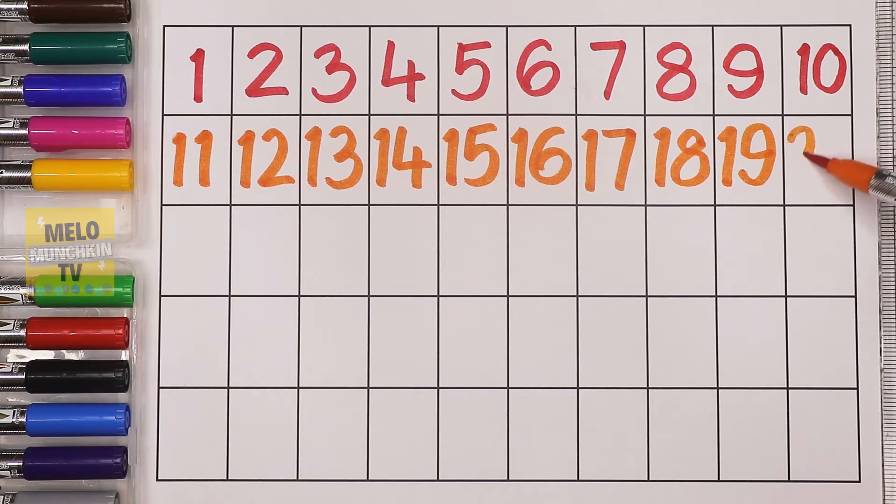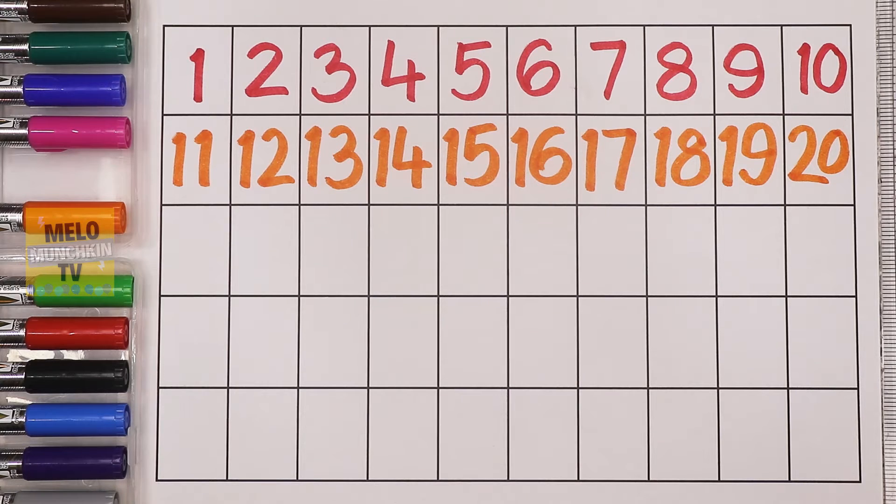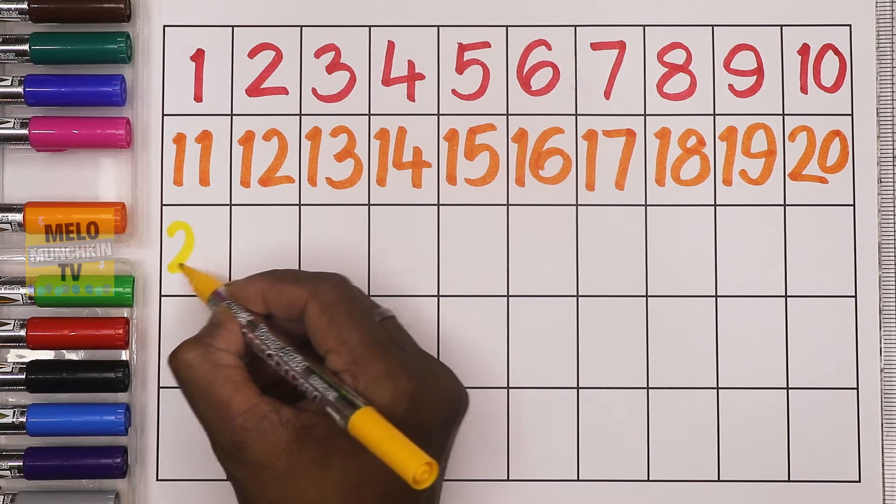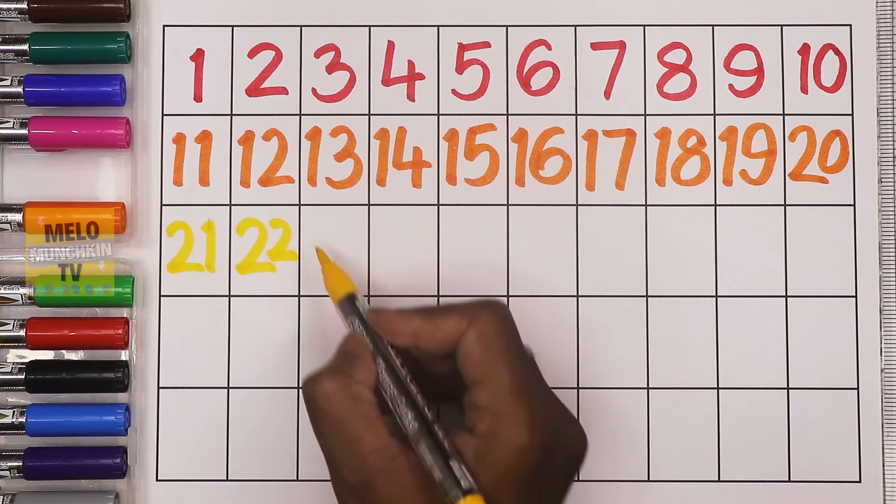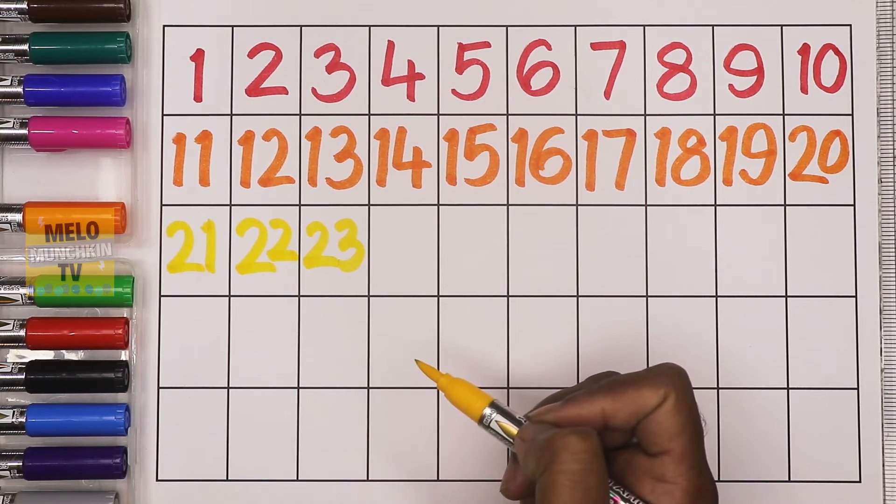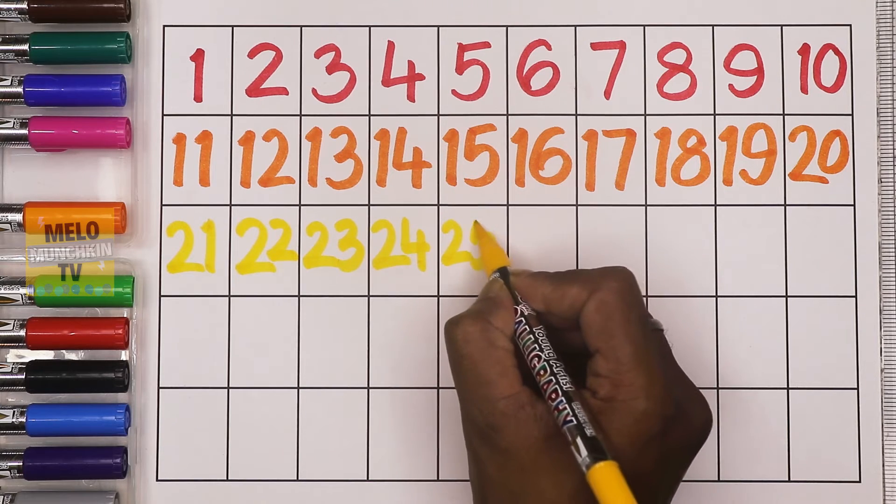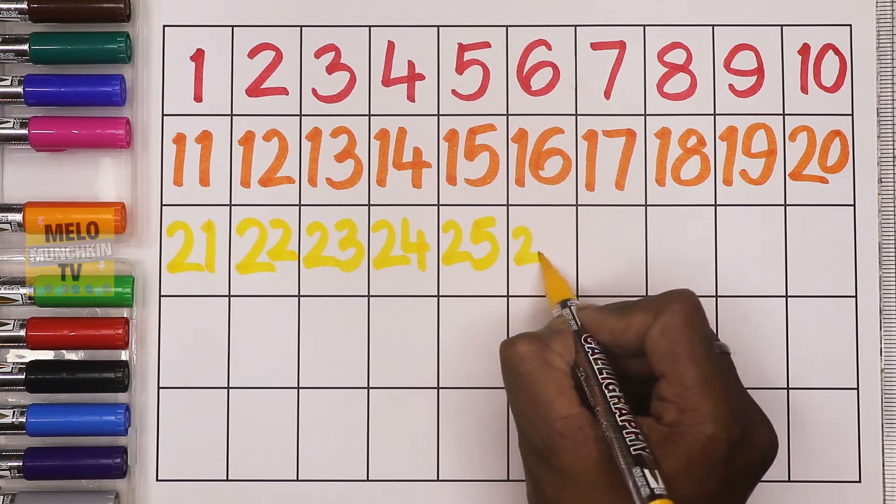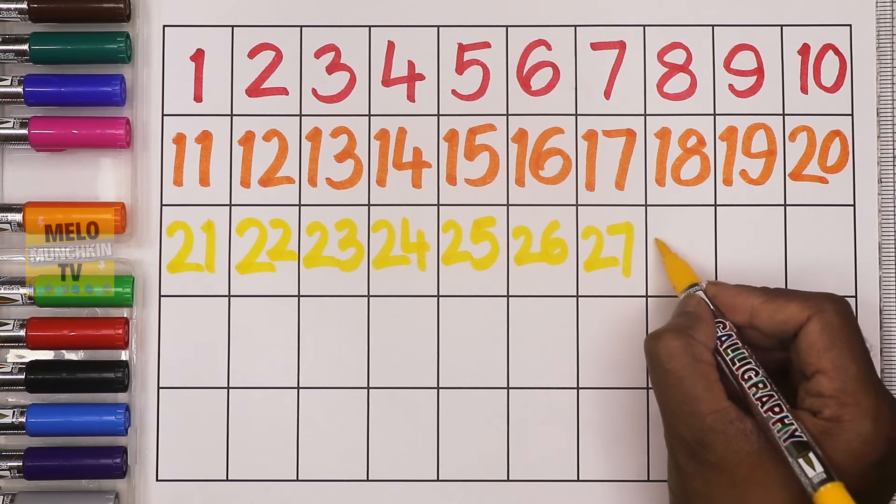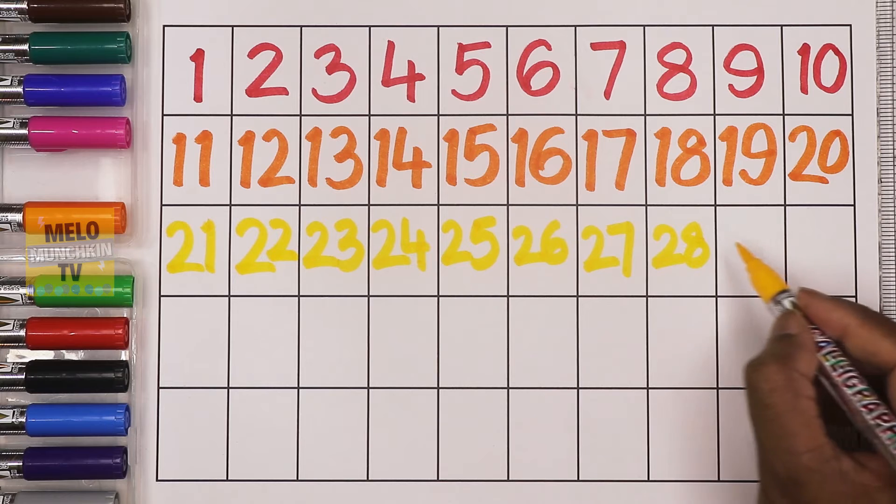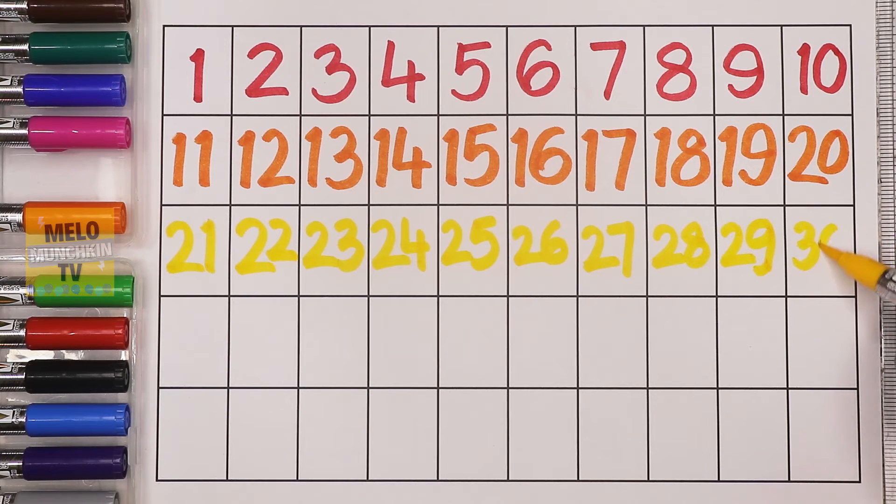2-0, 20. Yellow color. 2-1, 21; 2-2, 22; 2-3, 23; 2-4, 24; 2-5, 25; 2-6, 26; 2-7, 27; 2-8, 28; 2-9, 29; 3-0, 30.